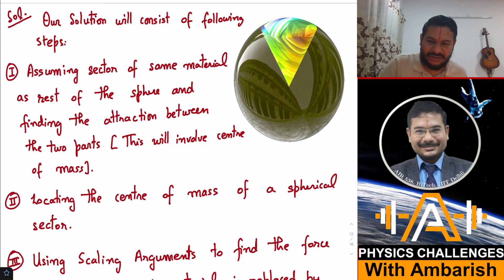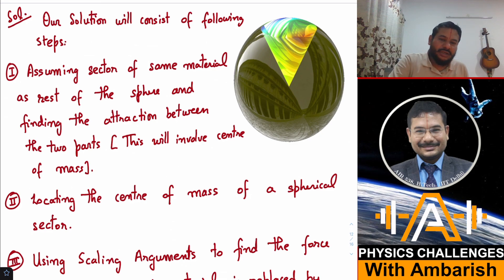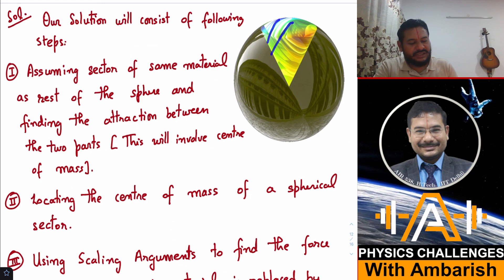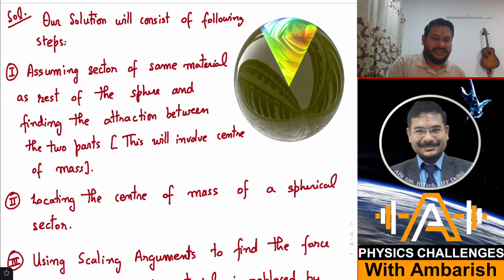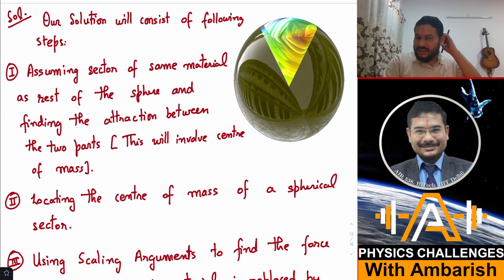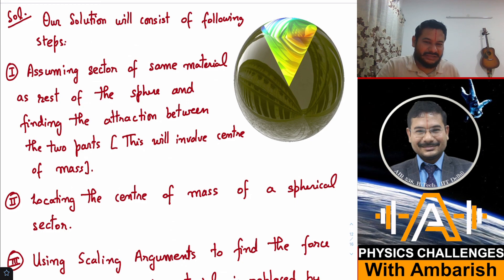My solution will consist of three steps. First, I will assume the sector is made of the same material as the rest of the sphere and find the force between the sector and the rest of the sphere. This will involve center of mass — you might not be immediately clear how, but as I go with the derivation you will see how I will be relating it to center of mass.